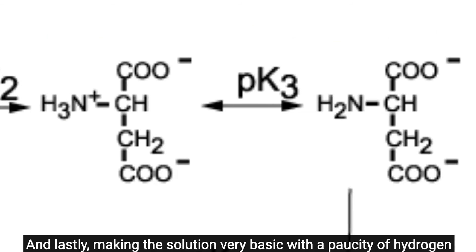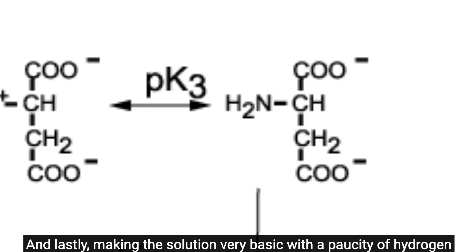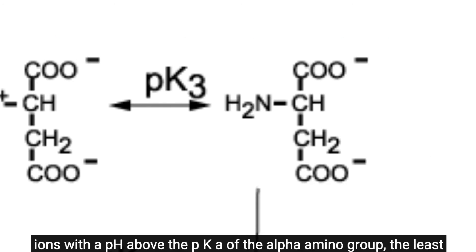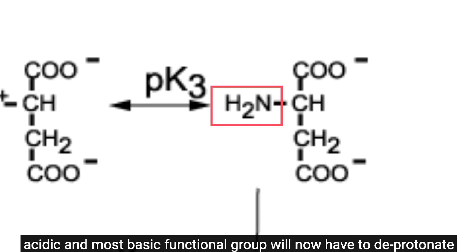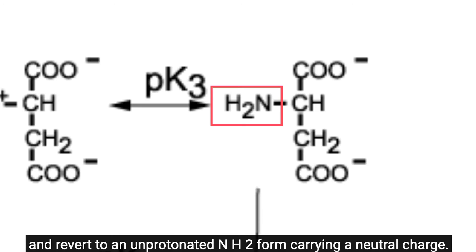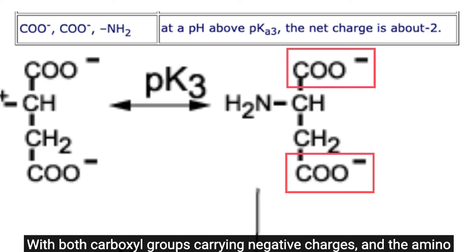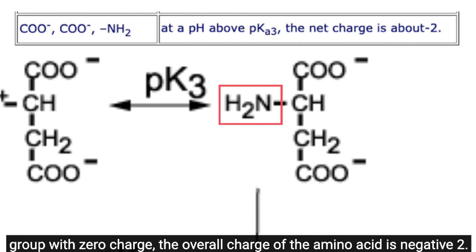Finally, making the solution very basic with pH above the pKa of the alpha-amino group, this least acidic and most basic functional group deprotonates and reverts to the unprotonated NH2 form carrying a neutral charge. With both carboxyl groups carrying negative charges and the amino group with zero charge, the overall charge of the amino acid is -2.